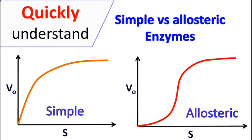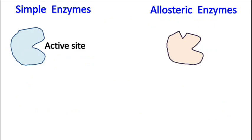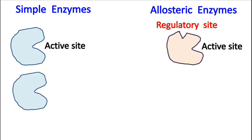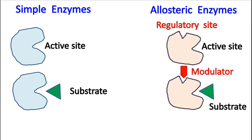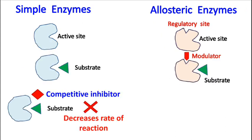Hey guys, quick biochemistry basics here. Let's talk about the difference between simple enzymes and allosteric enzymes. Simple enzymes only have one active site, whereas allosteric enzymes have an active site and a regulatory site. Simple enzymes are substrate specific, whereas allosteric enzymes are specific for the substrate and a modulator.